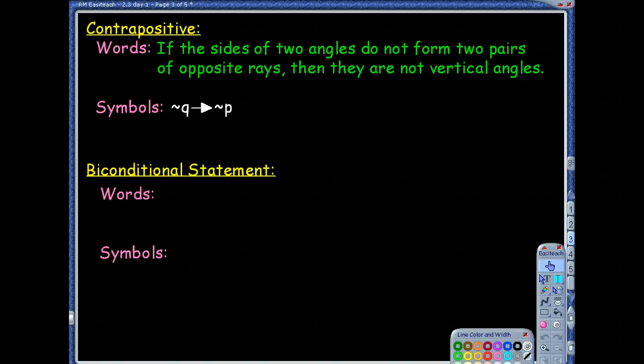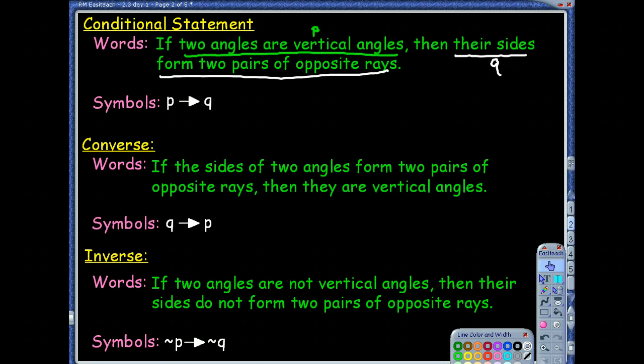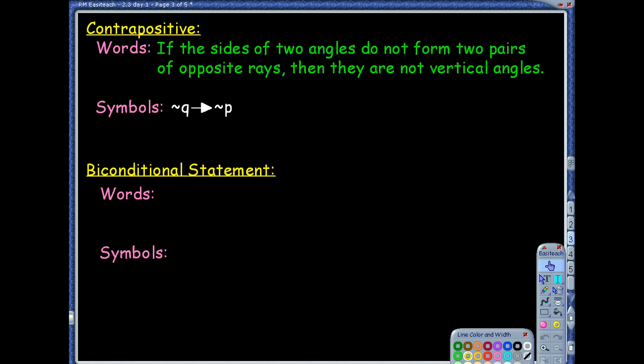What about the biconditional statement? We want to put together which two things? The converse and the conditional. We can do that because both of those are true statements. This is the definition of a vertical angle. Definitions we know can make biconditionals. So the way to do that, we're going to look at the conditional statement. I'm going to mark out the if and mark out the then. In replace of the then, I'm going to put if and only if. So it's going to read two angles are vertical angles, if and only if their sides form two pairs of opposite rays.